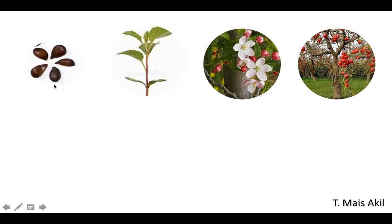First, we said the seeds should be planted in the soil, then they germinate and grow into a seedling. Then the seedling grows into an adult plant. The adult plant grows flowers, then the flowers reproduce by pollination. After that, they make the seeds and then the fruits grow around the seeds.